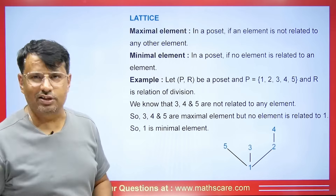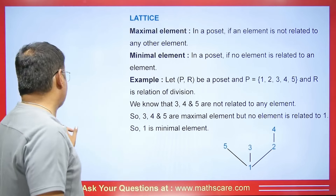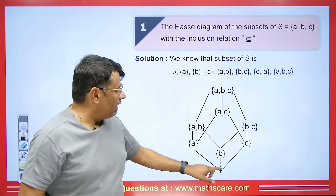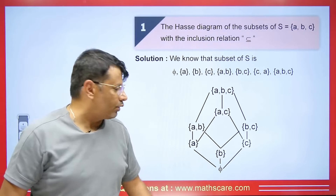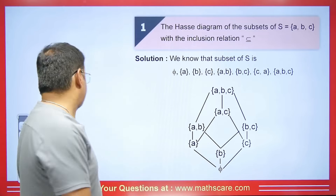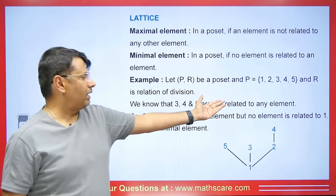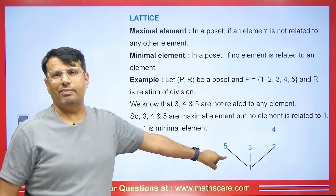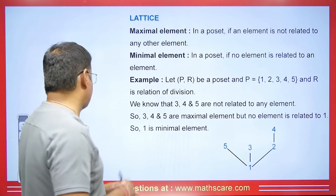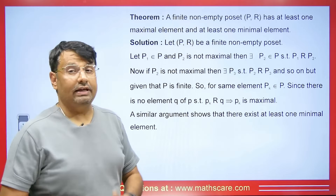The element with which no other element is being related from below is known as a minimal element. In the latest diagram, 5 here is a minimal element because nothing is related to it from below. As mentioned, we have maximal elements 4, 3 and 5, and a minimal element which is element 1.